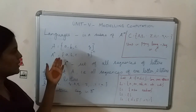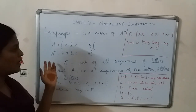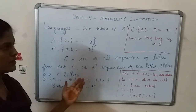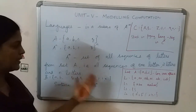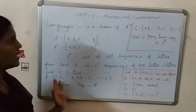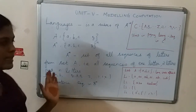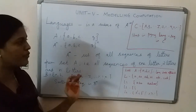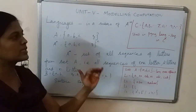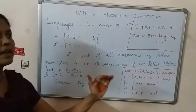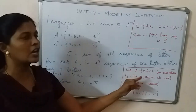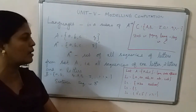Here, let us take a set A and A star. A star consists of all sequences of letters from set A. Likewise, we can take set B and C. So C, the sentence from B, represents the sequence in B star. Likewise, a statement in any programming language is a sequence in C star. So let us take A equal to {a, b, c}.